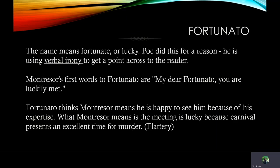Another character is Fortunato. The name means 'fortunate' or 'lucky.' Poe names him this for a reason — he is using verbal irony to get a point across to the reader. Montressor's first words to Fortunato are, 'My dear Fortunato, you are luckily met.' Fortunato thinks Montressor means he is happy to see him because of his expertise. What Montressor means is that the meeting is lucky because Carnival presents an excellent time for murder.